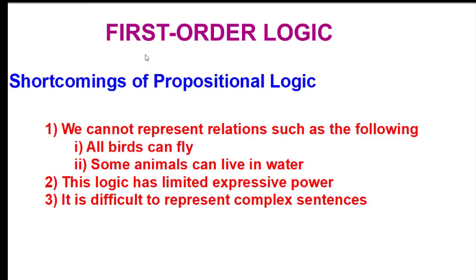The first shortcoming is that we cannot express things like 'all birds can fly' in one sentence using propositional logic. Suppose we want to assert that all birds can fly — we have to assert the names of all the birds: that eagles can fly, pigeons can fly, sparrows can fly, and so on.